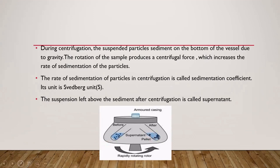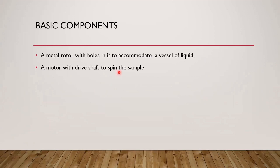The basic components of a centrifuge include a metal rotor with holes to accommodate the sample vessels. The centrifuge rotor is the rotating unit of the centrifuge, which has fixed holes drilled at an angle so that test tubes are placed inside these holes. The rotor spins to aid in the separation of the material.